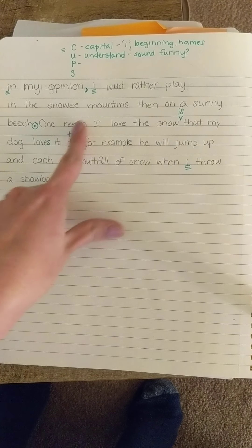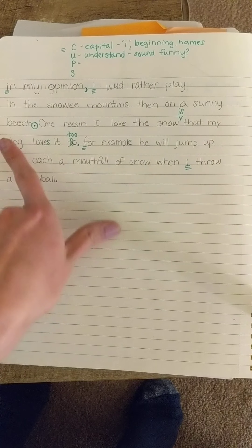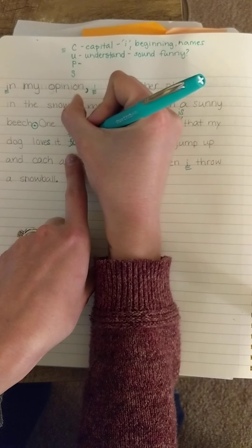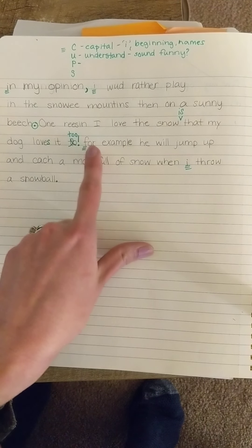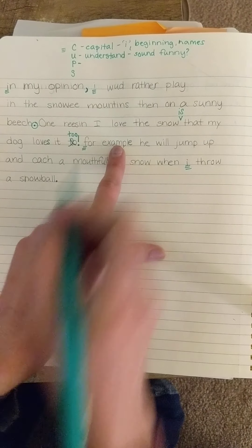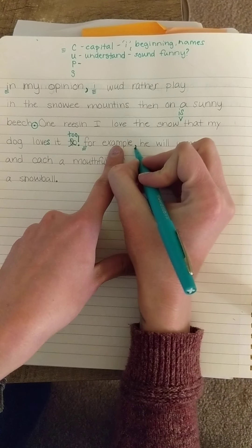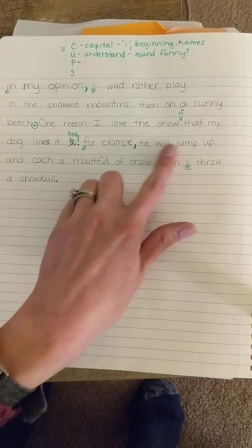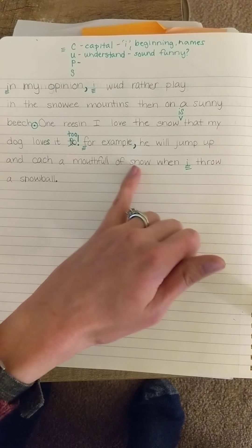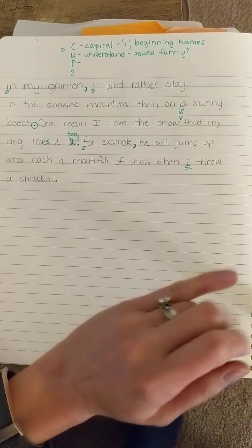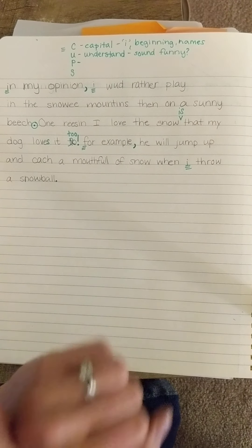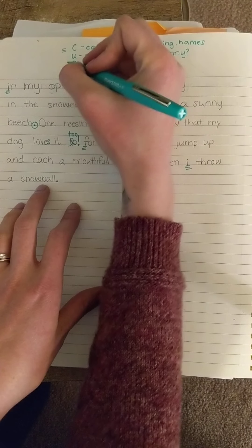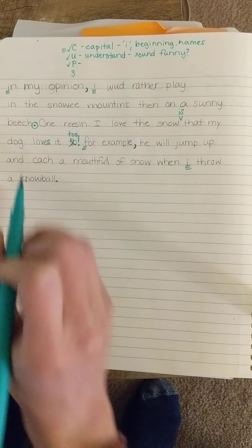So then I do have a capital. One reason I love the snow is that my dog loves it too. I think I'm a little bit excited about that. I love that my dog loves the snow. I'm going to use an exclamation point instead of a period. For example, I have to pause there so I don't just say for example he will. I say for example, he will jump up and catch a mouthful of snow when I throw a snowball. Awesome. I think it all makes sense. I have the right punctuation marks to help me pause when I need to and to end my ideas. Done with punctuation, understanding, and capital letters.